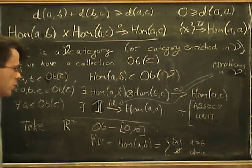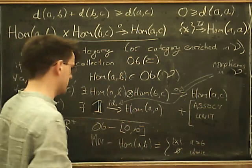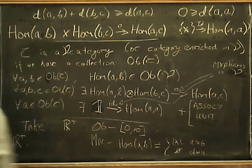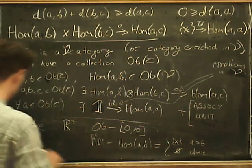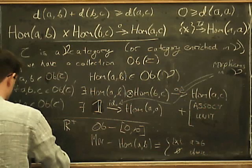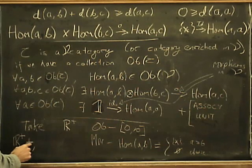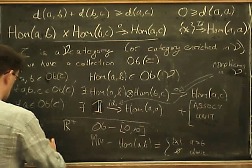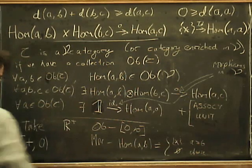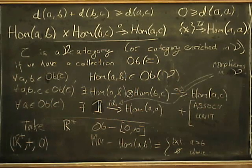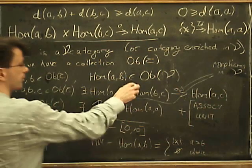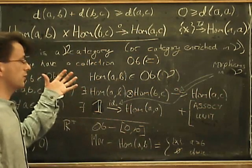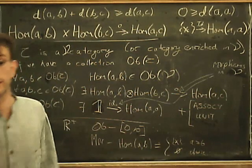And we can make this into a monoidal category. This is a perfectly good category, we can make this into a monoidal category by just taking the usual sum in the arithmetic sense of numbers, and the unit object for that monoidal product is just zero. So if you just fill in what you get here, then you will get the sort of generalized notion of metric space, which I will go into next time.